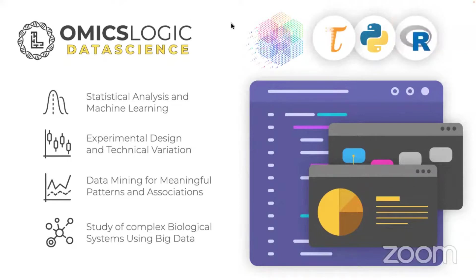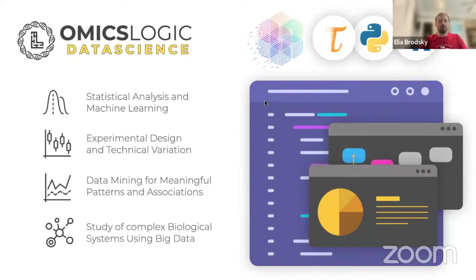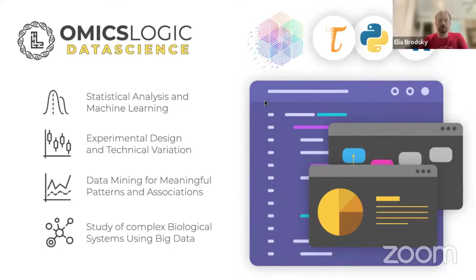And then finally, how to study complex biological systems using big data. When I speak about complex biological systems, any system in our body — for example, whether it is our nervous system or our immune system — these systems are complex.